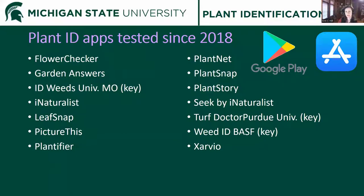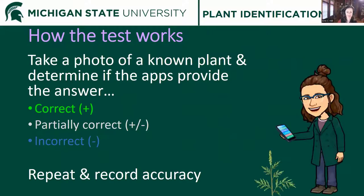That's where plant ID smartphone applications have come in as a real advantage. For most of these, the mode of operation is that you take a picture and it gives you feedback as to what that plant is. There are a couple that work more like keys — an intermediate between internet searches and apps. Since 2018, I've been testing plant ID smartphone apps available for both Android and iOS to use in my Weed Science Lab course, CSS 226L, and it's built over time into this article I mentioned earlier.